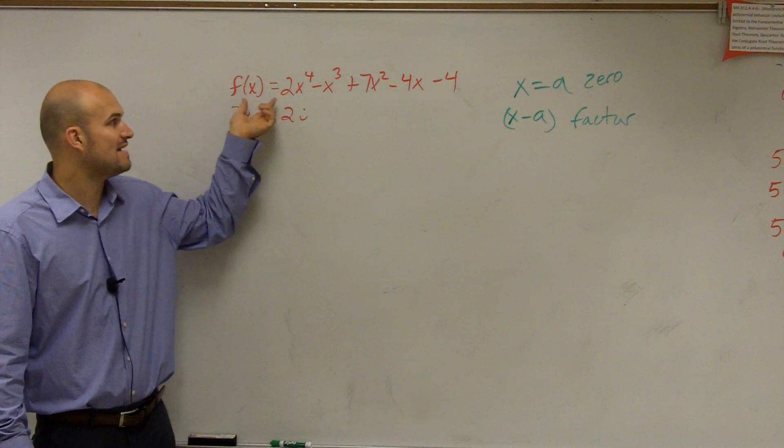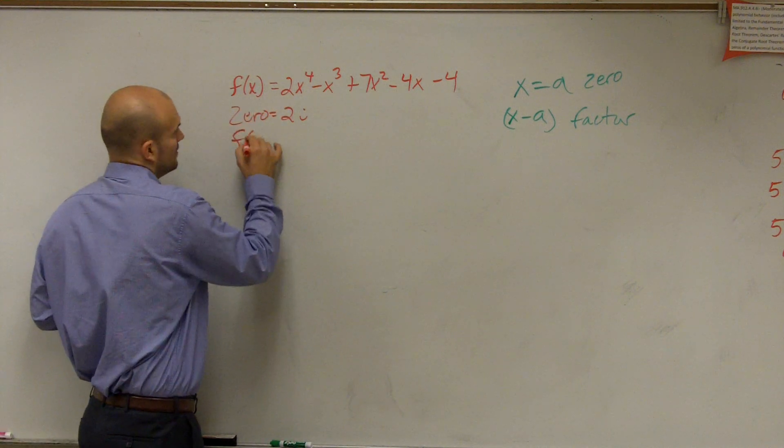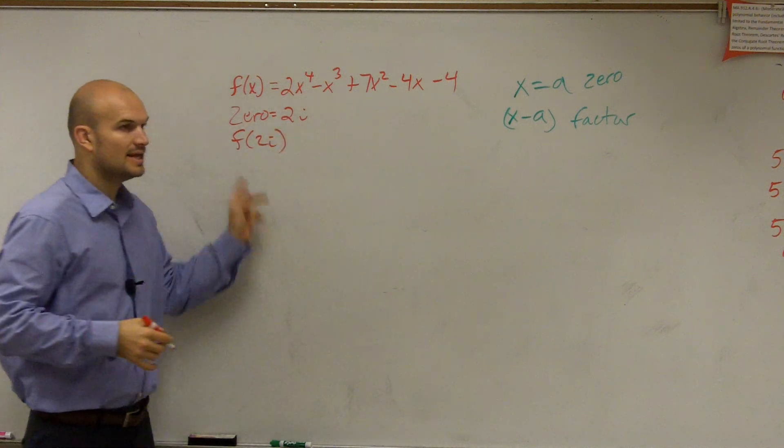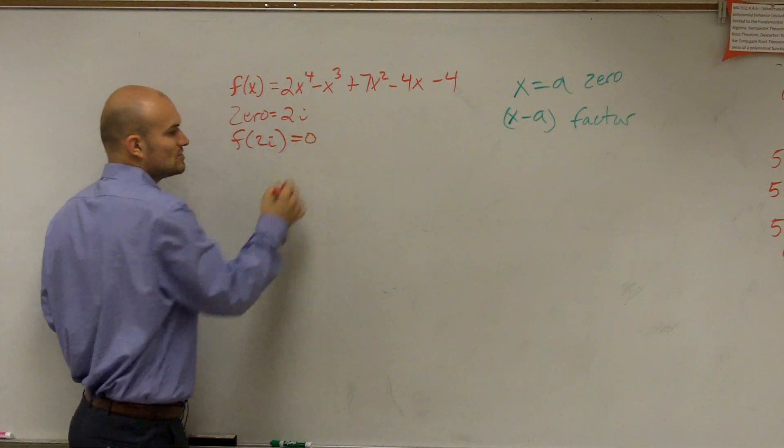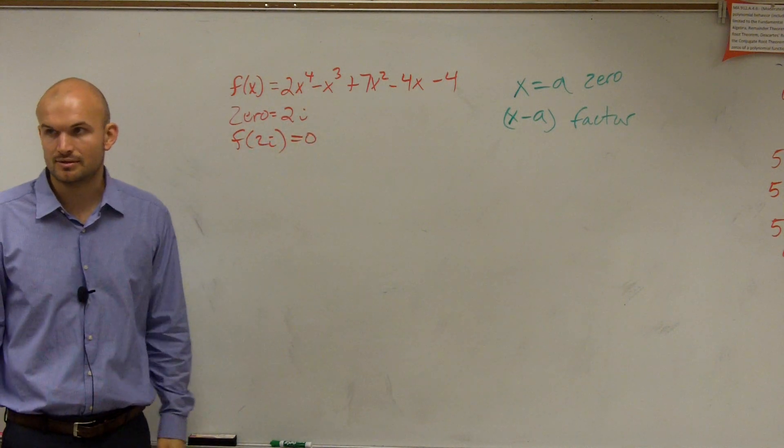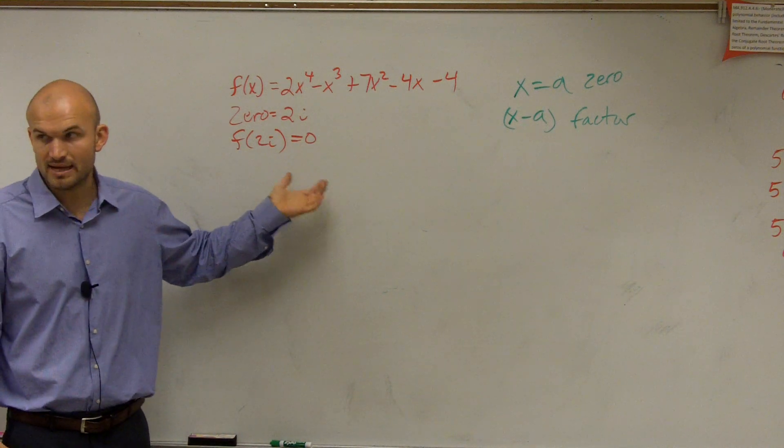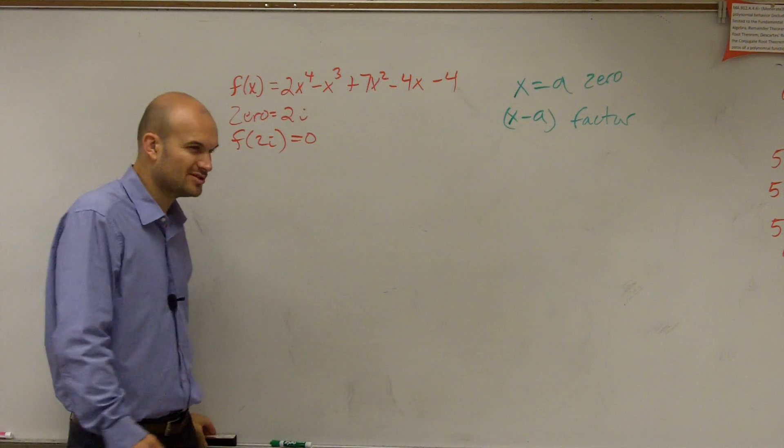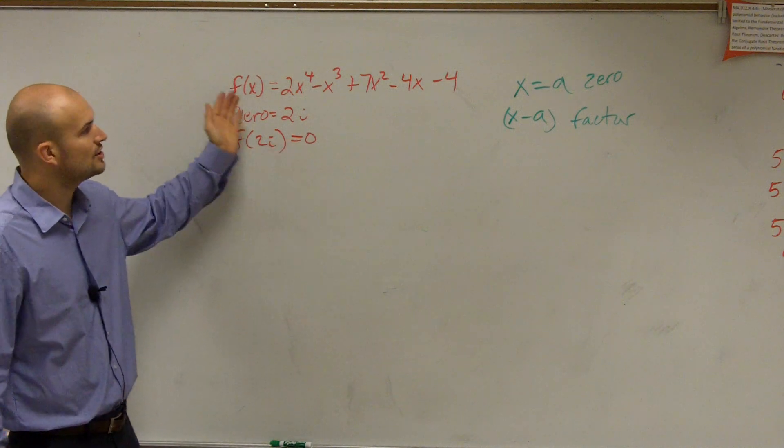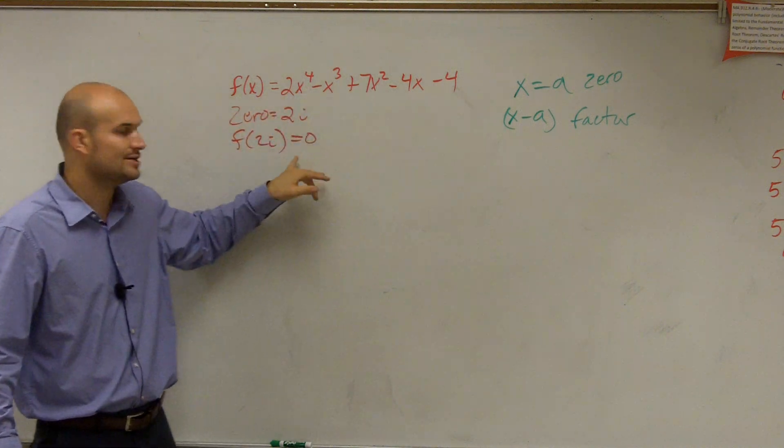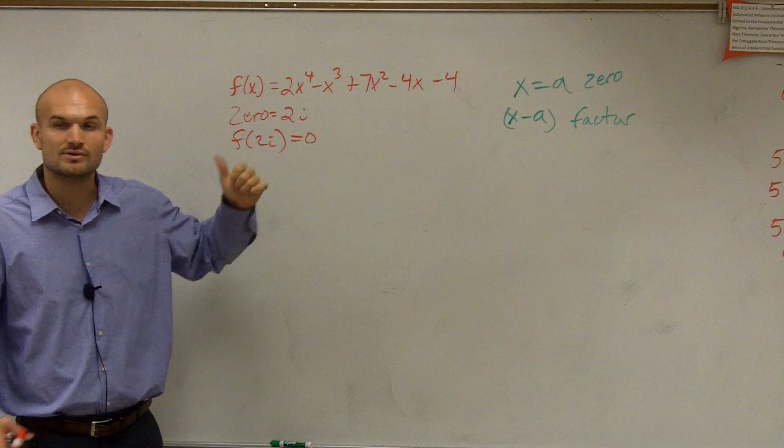You can take this zero and evaluate. You can do f of 2i. If f of 2i equals 0, then that's a remainder. Or I'm sorry, then that's a zero. The remainder theorem. We talked about it in your notes. We didn't do a lot of work with it. But you guys need to know you can evaluate it. And if you get 0 when you evaluate it, it's a zero.